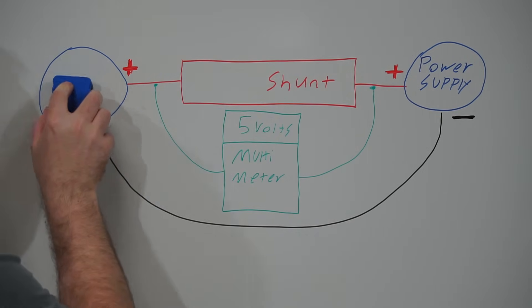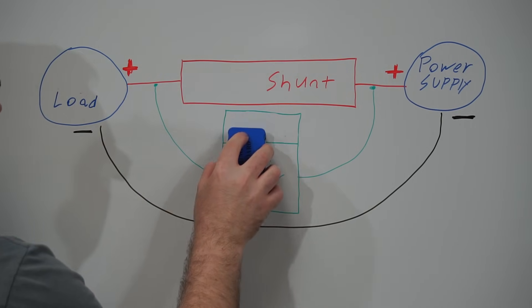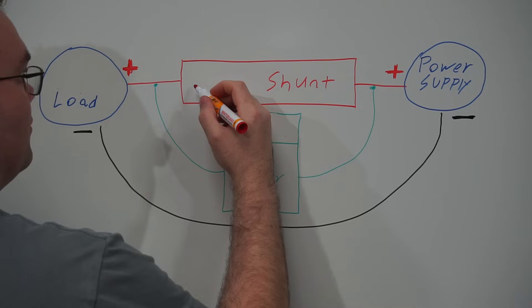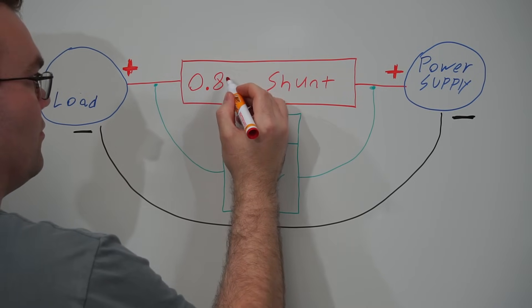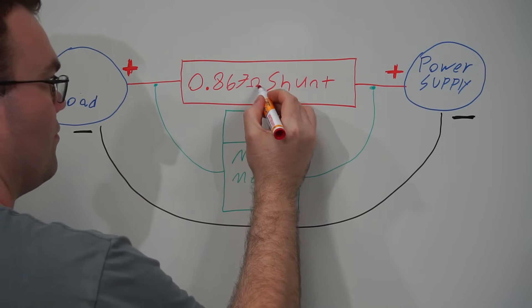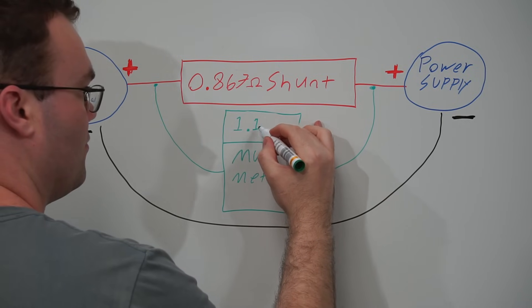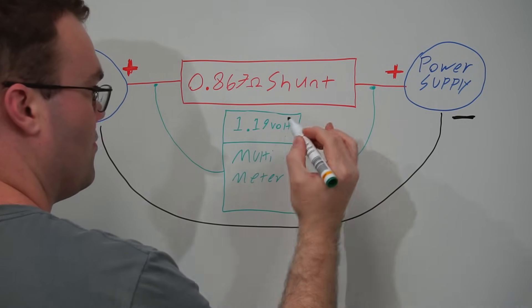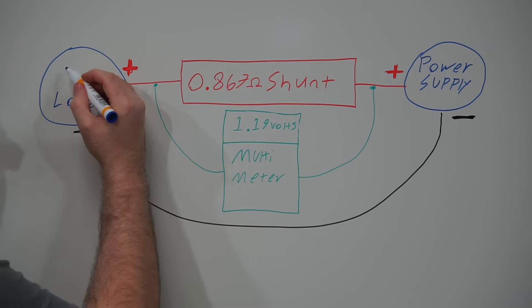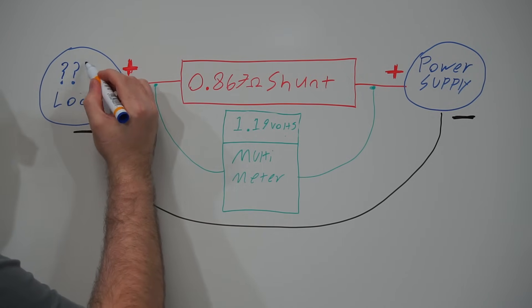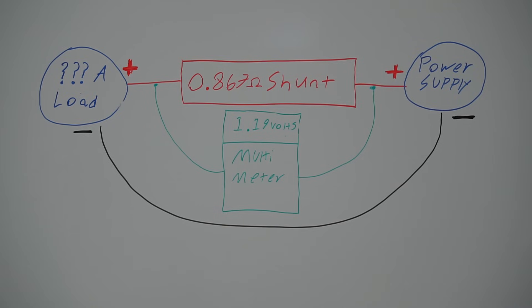In this example, I have deliberately used round numbers to keep the math simple. But what if we don't have a precision 1 ohm shunt? Maybe our shunt has a random value. So let's give our shunt a new value: 0.867 ohms looks pretty random to me. And our multimeter is reading 1.19 volt drop across the shunt. Now in this new scenario, we have a load but we don't know how much current it's drawing.